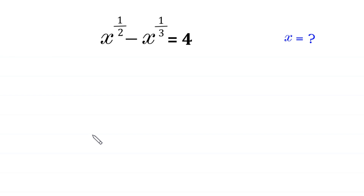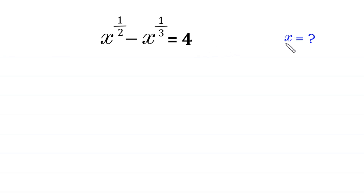Hello, welcome to how to solve this very nice algebra equation: x to the power 1 over 2 minus x to the power 1 over 3 is equal to 4. We need to find all possible values of x.